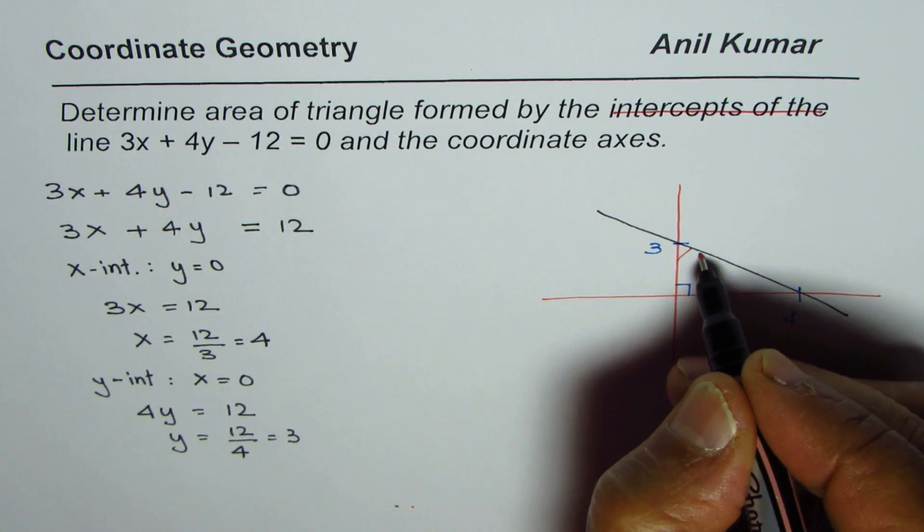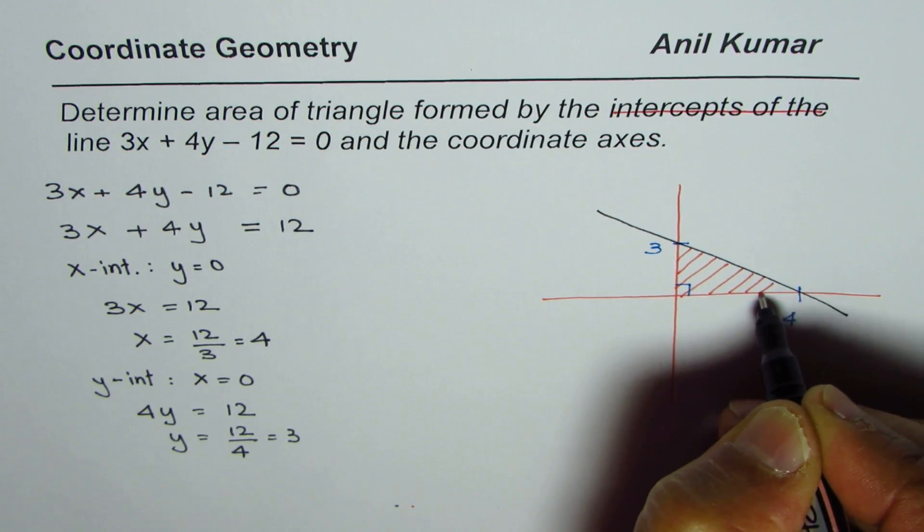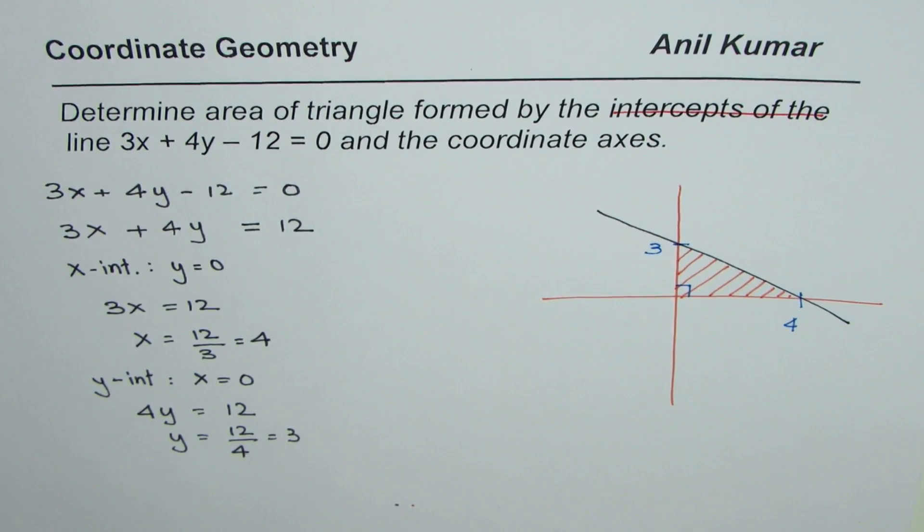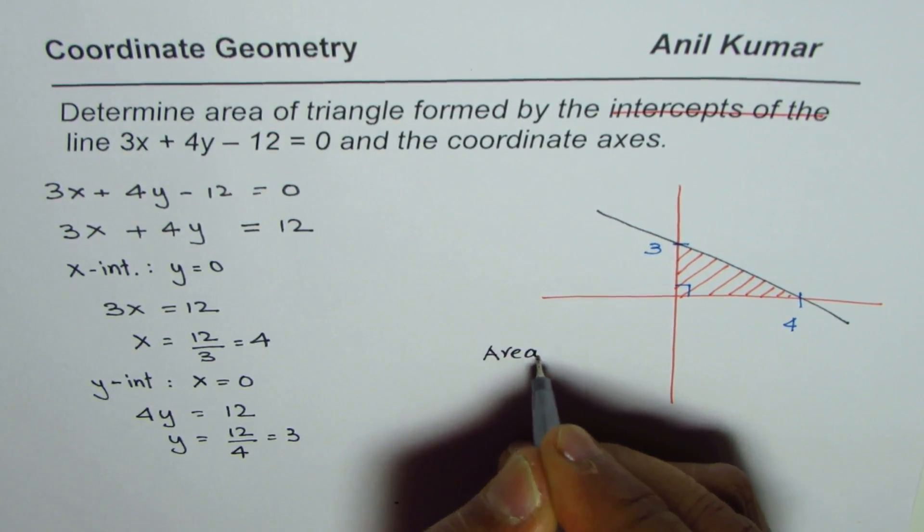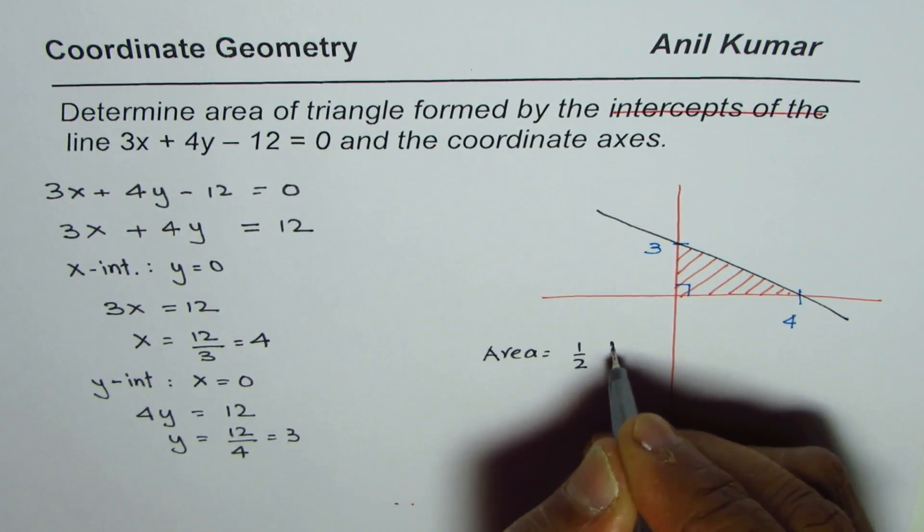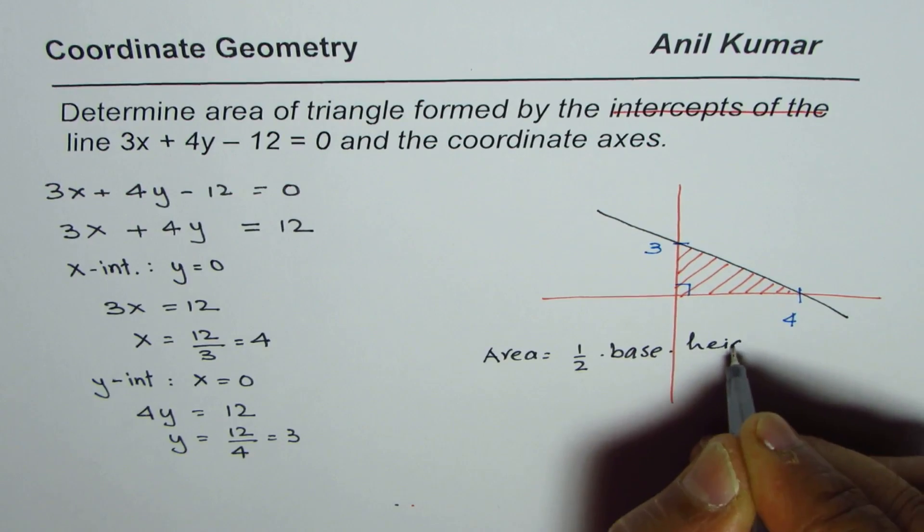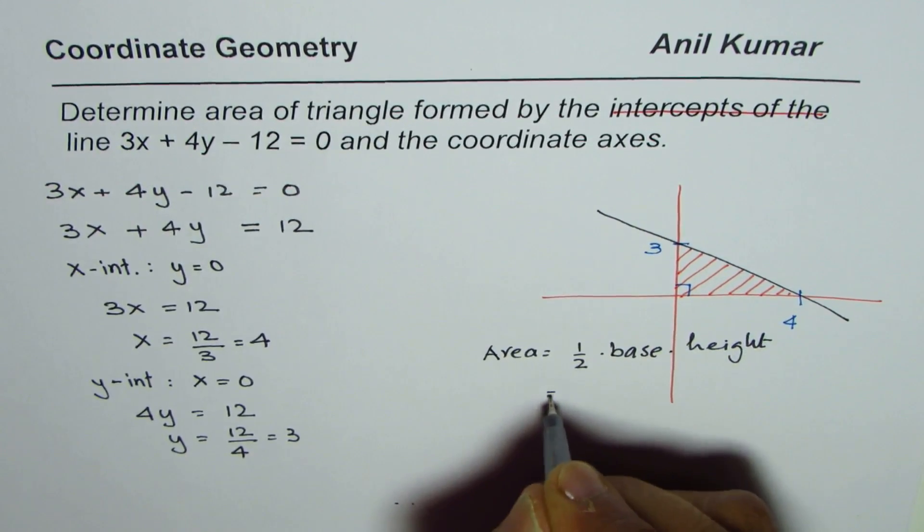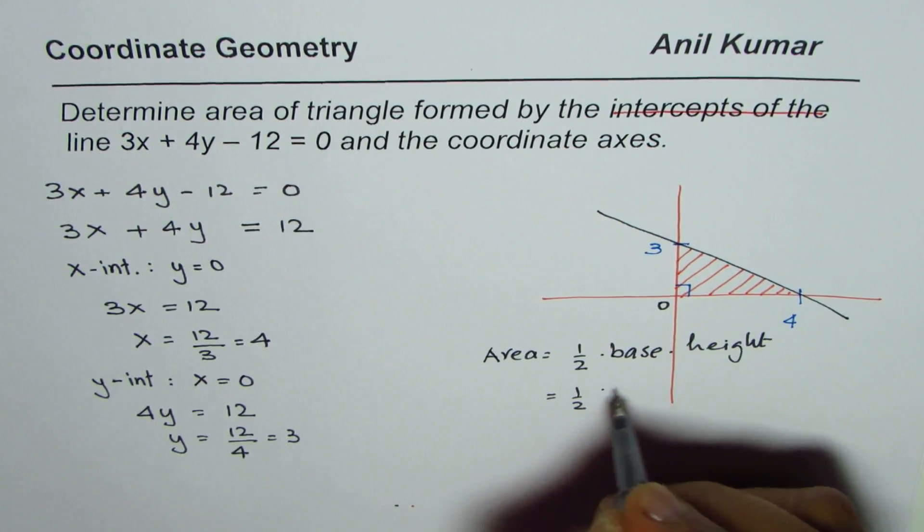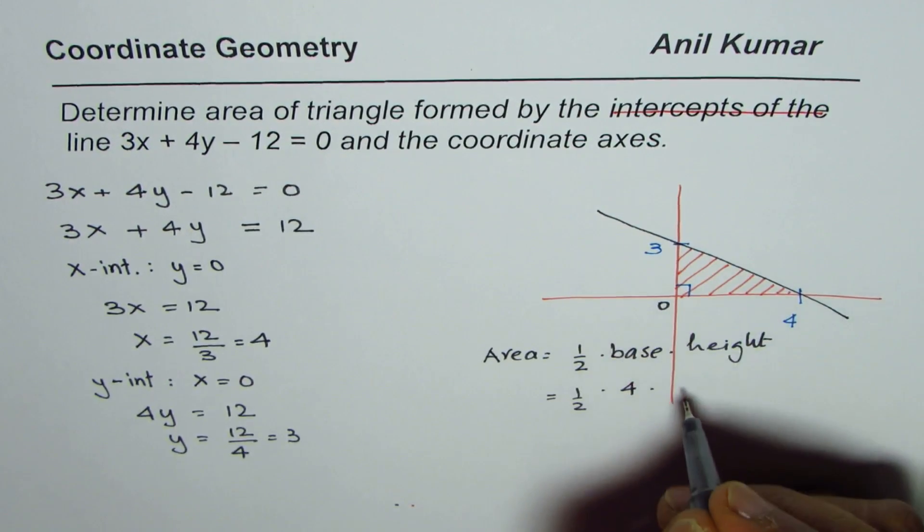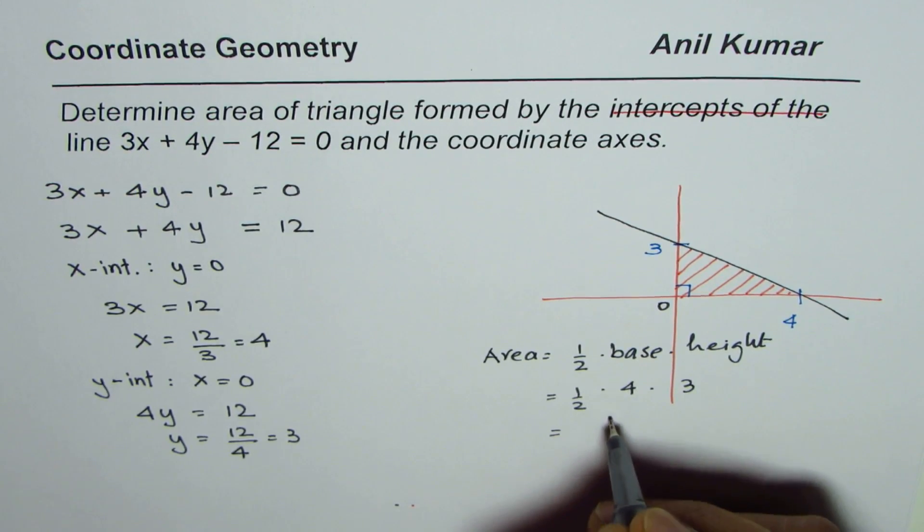That is to say we're talking about this area now. That is the area which we are trying to find out. So as you know area of the triangle is half base into height. In our case base is 4 units long so times 4, height is 3. So we get 2 times 3 as 6.